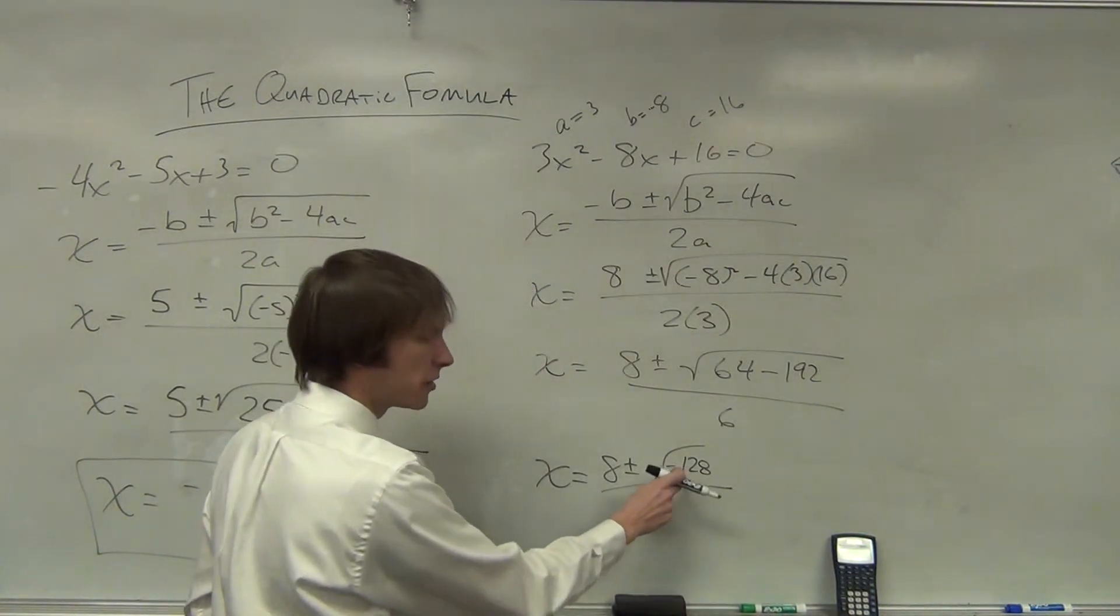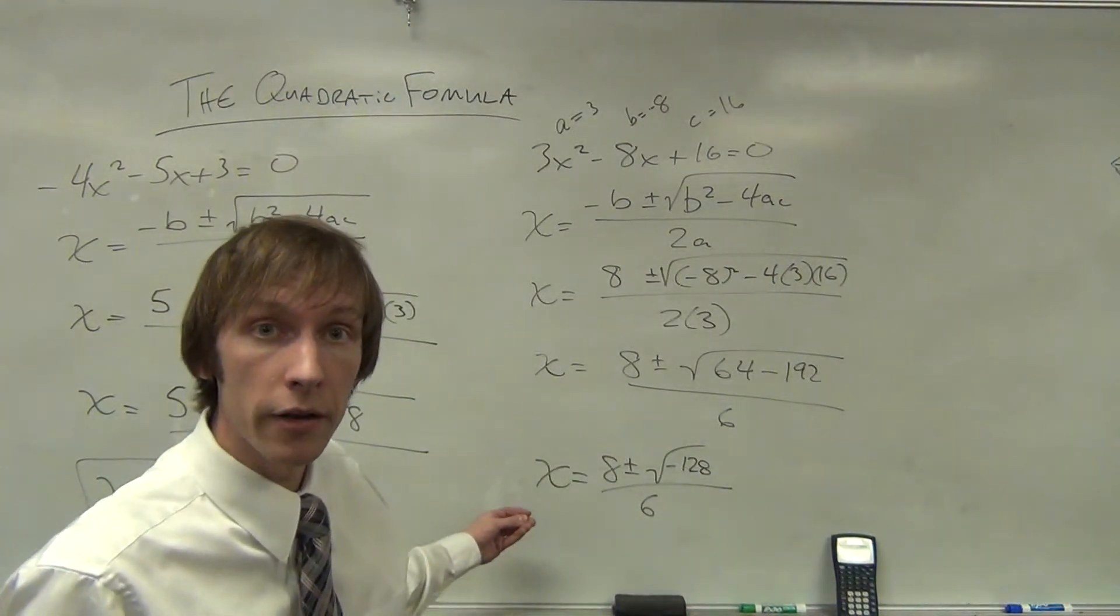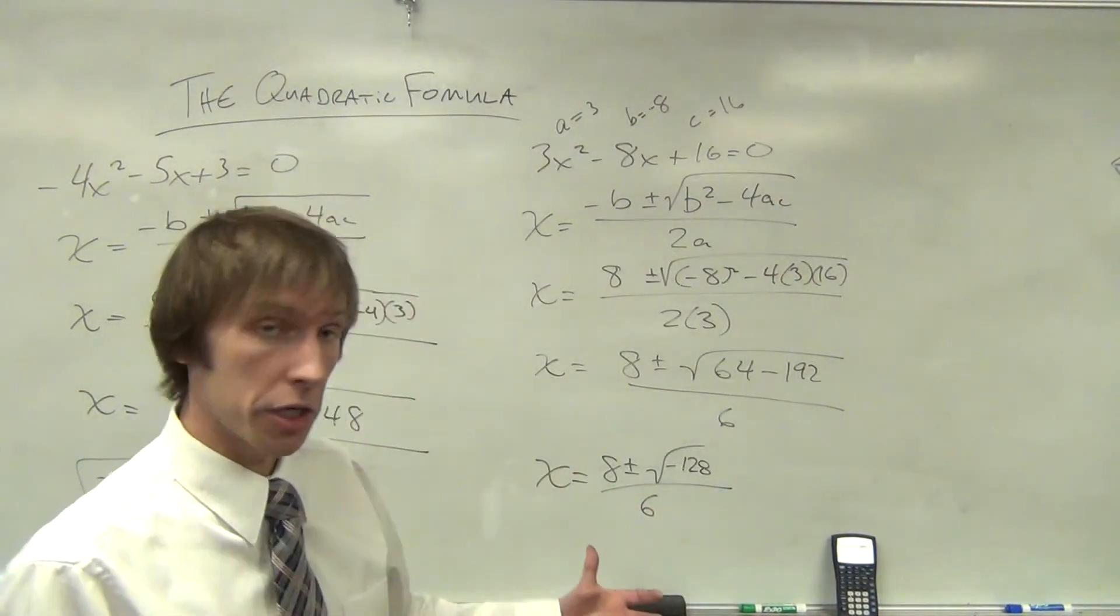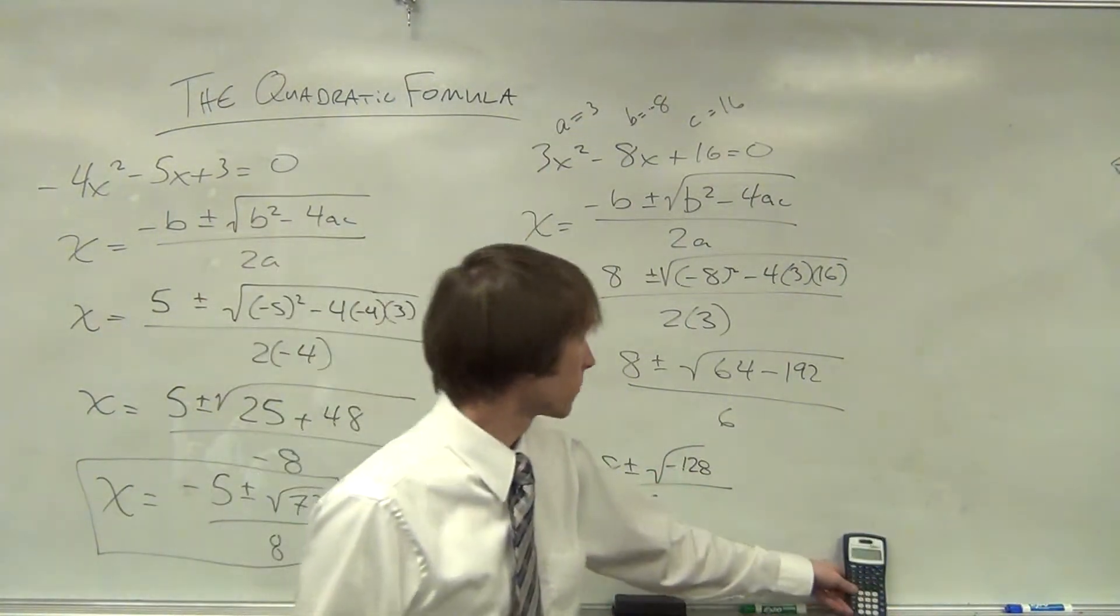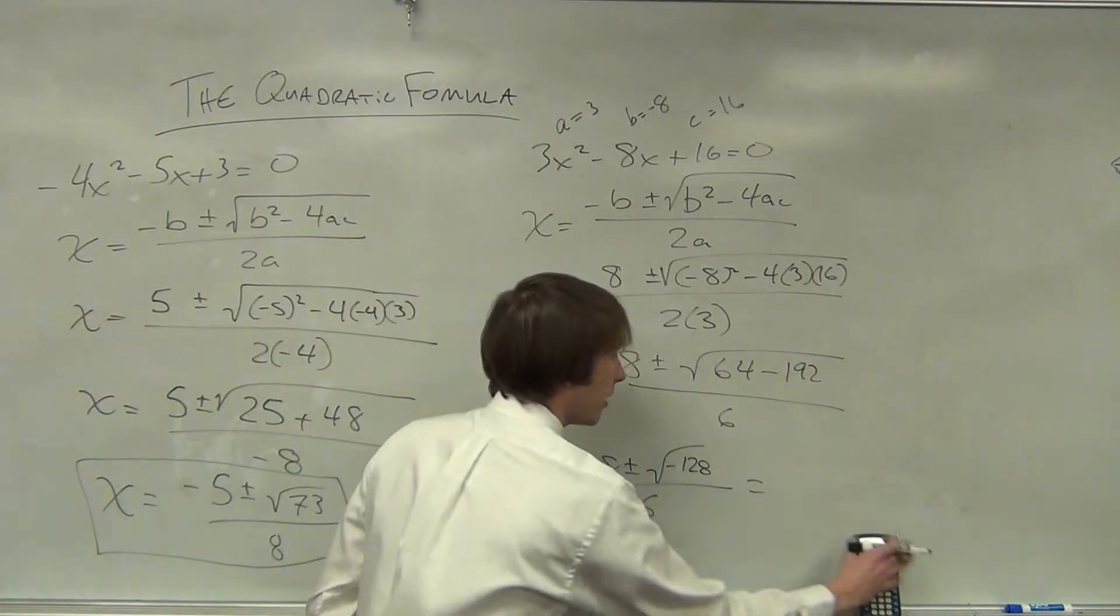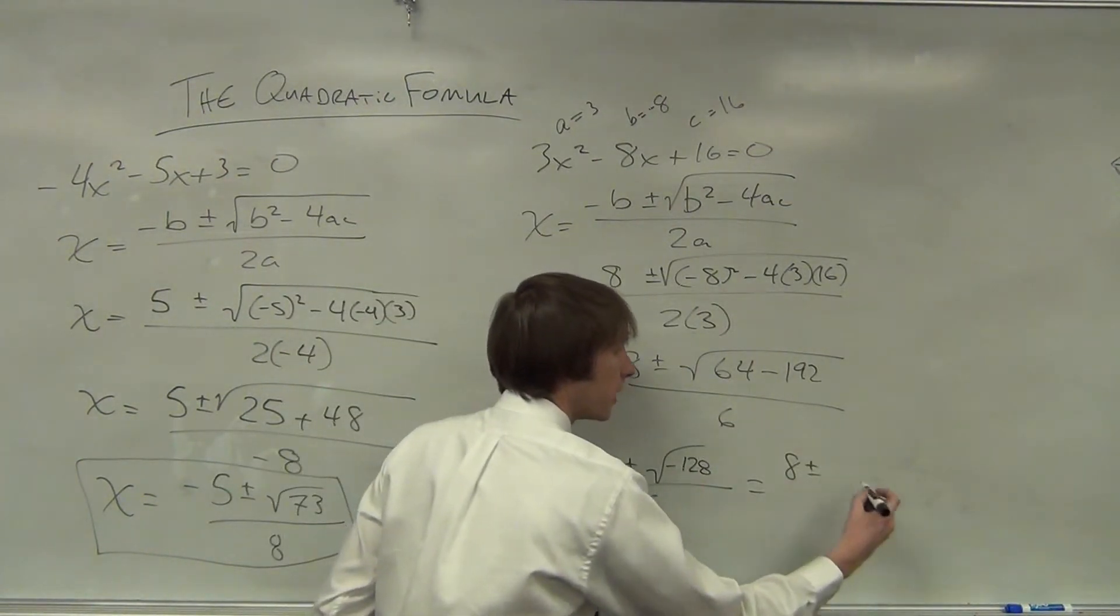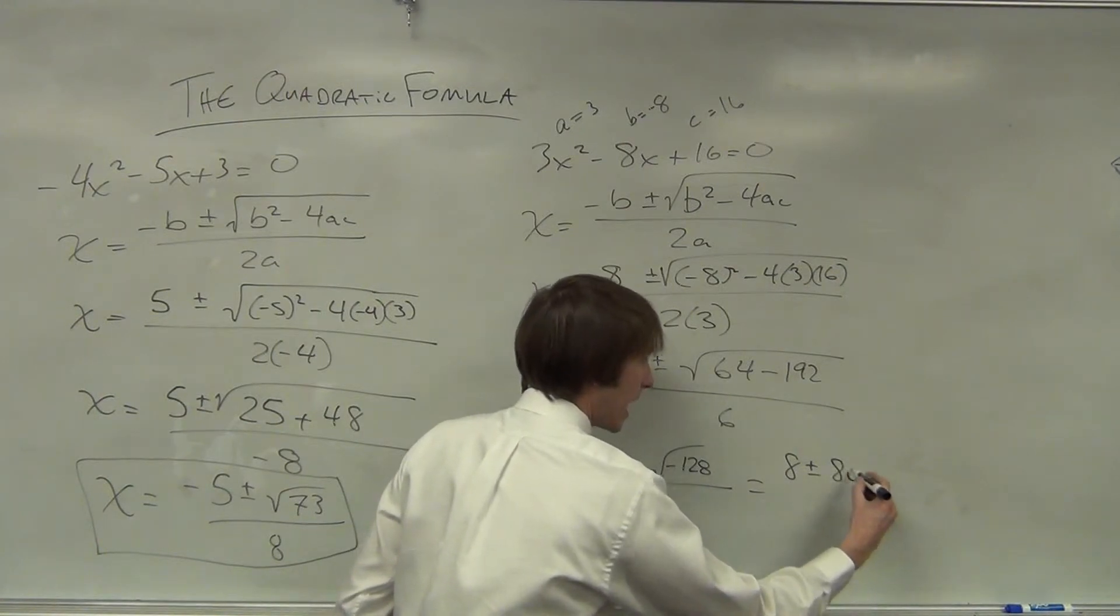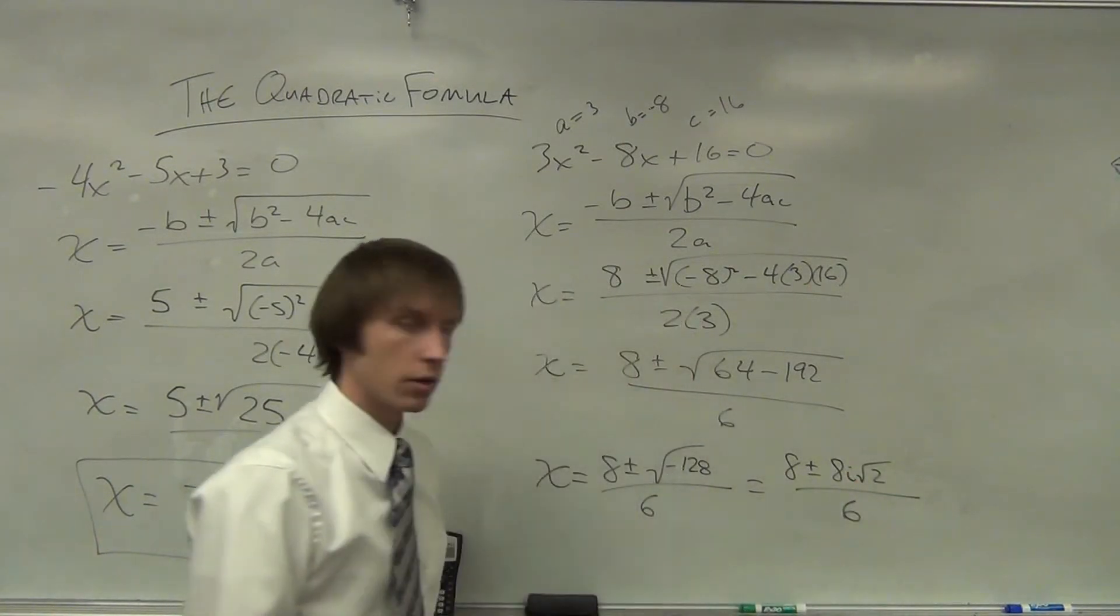So x is equal to 8 plus or minus the square root of -128 over 6. This we need to simplify in more ways than 1, not just take out the -1 as i, the imaginary number, but we have 64 times 2 in here. So that means that we actually have x is equal to 8 ± 8i√2 over 6.